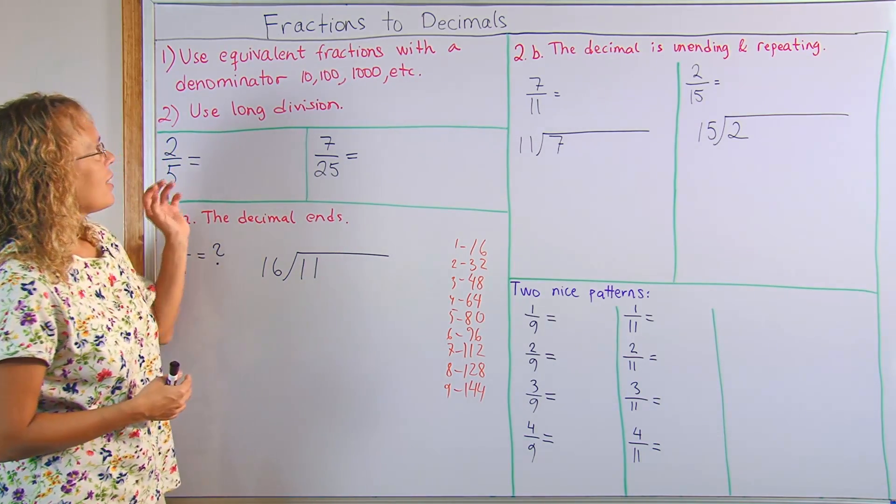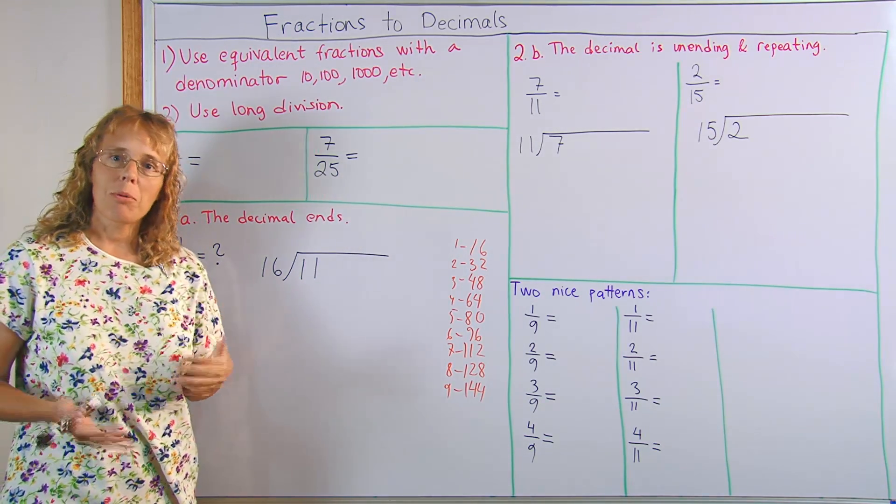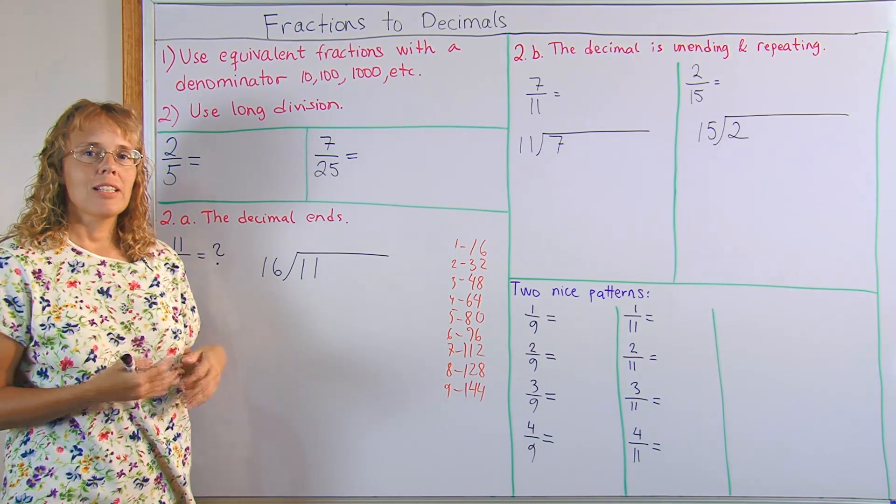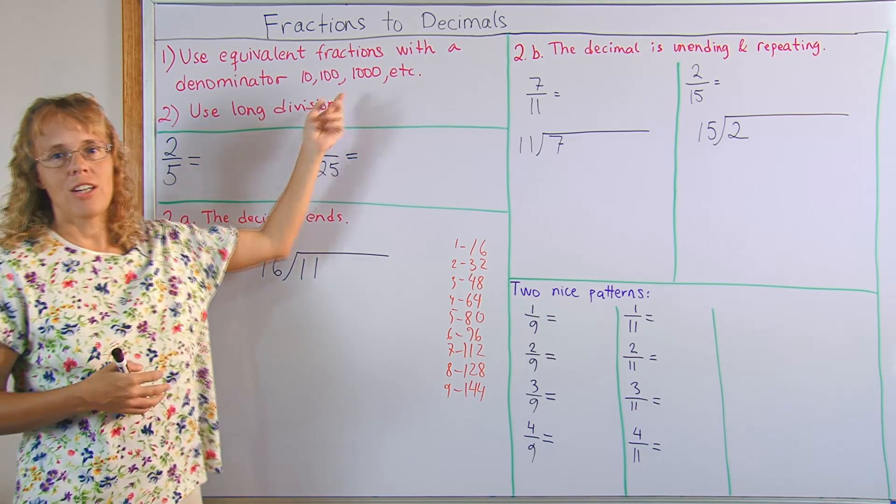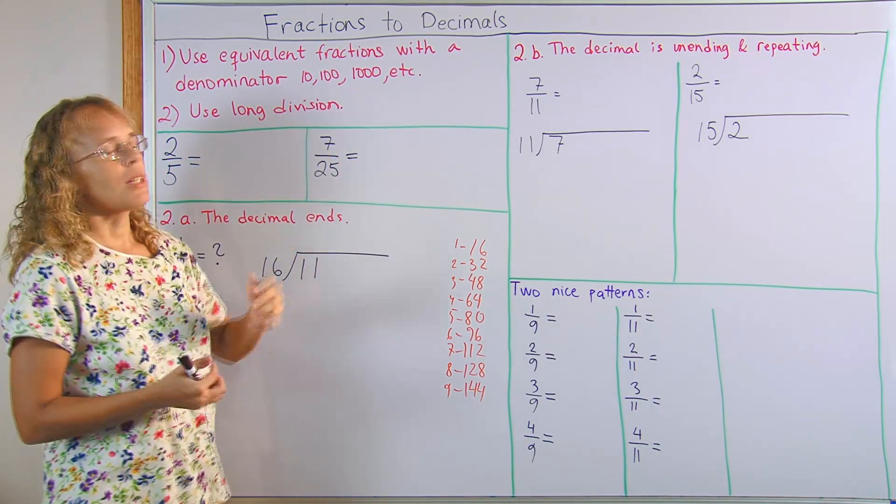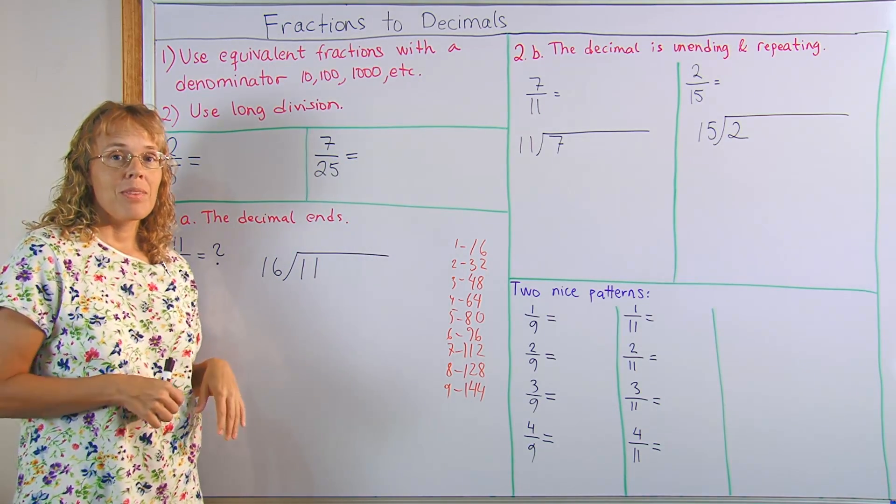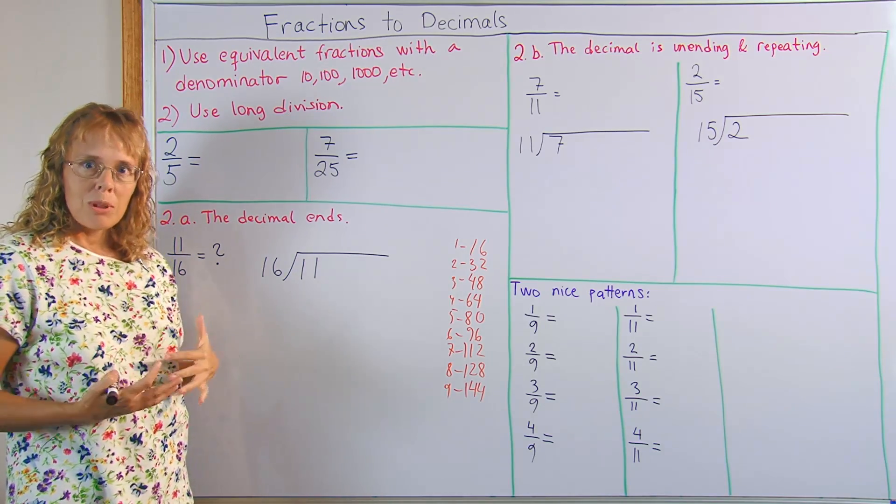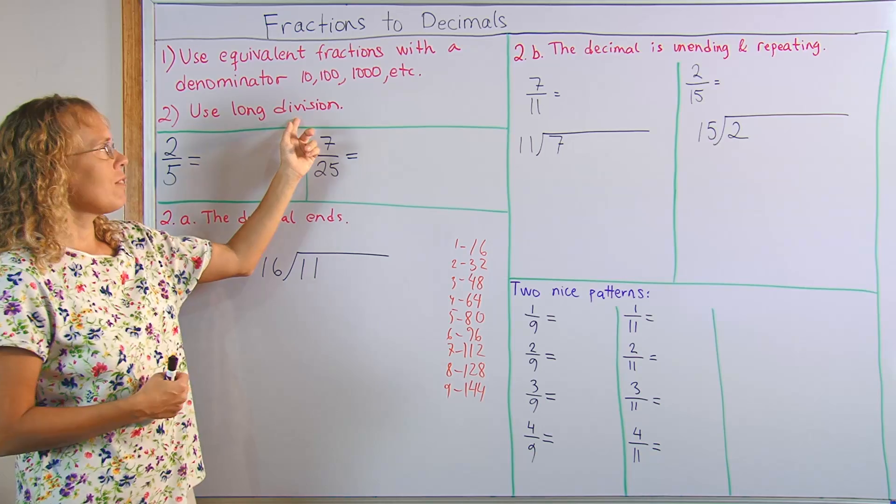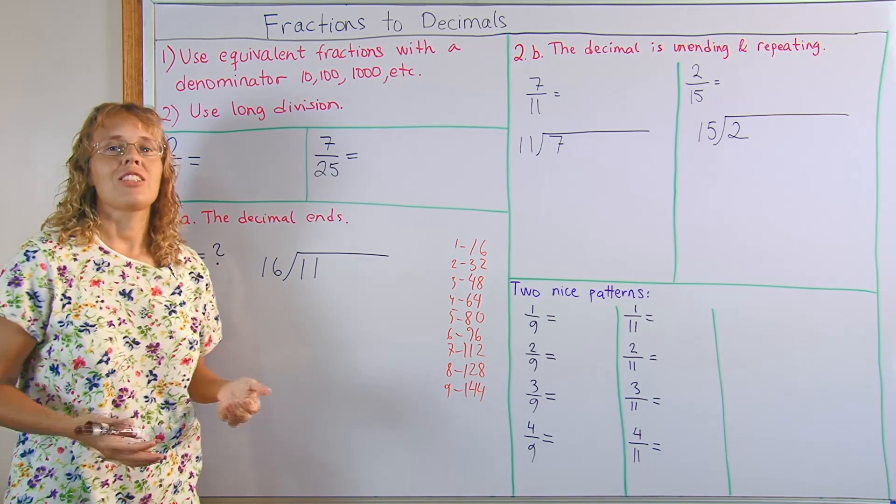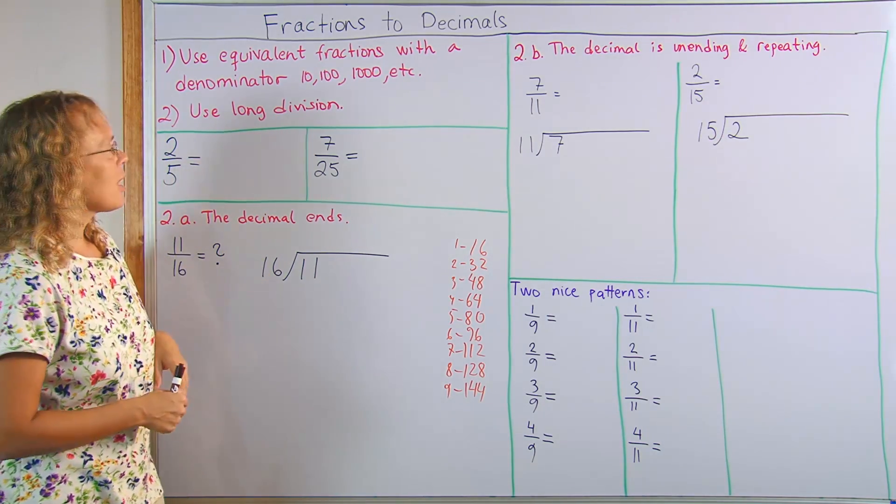There's basically two ways you can do this. The first way is that sometimes we can use equivalent fractions and we can get the denominator to be 10 or 100 or 1000, and from that we can easily write a decimal. The other more common case is that we need to use division. I said long division here but you could also use a calculator to divide. Let's look at some examples.